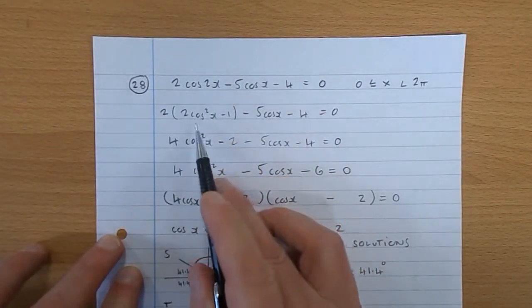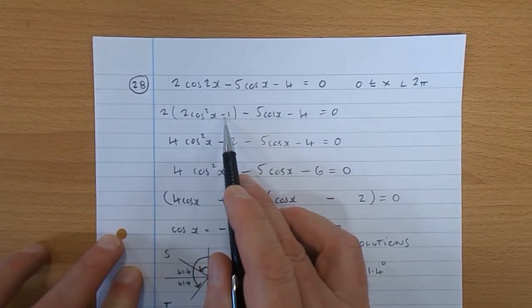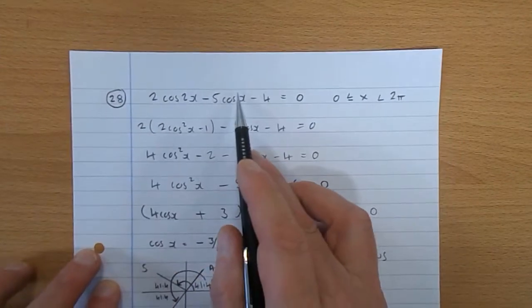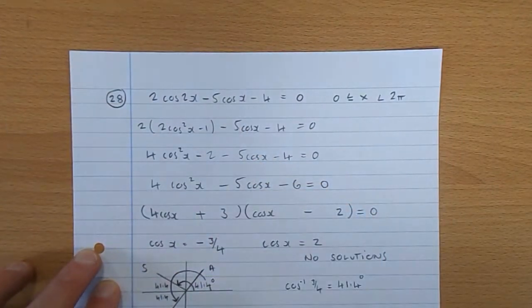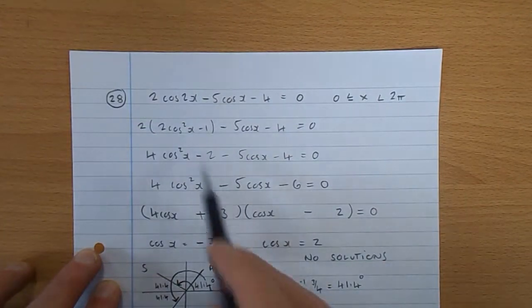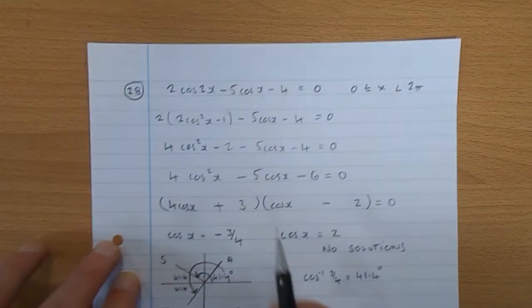Cos2x, we need to get rid of that. That's 2cos²x minus 1. Why did I pick that one? Because the other part of this question has to do with cos, so that's me got a sum just with cos.